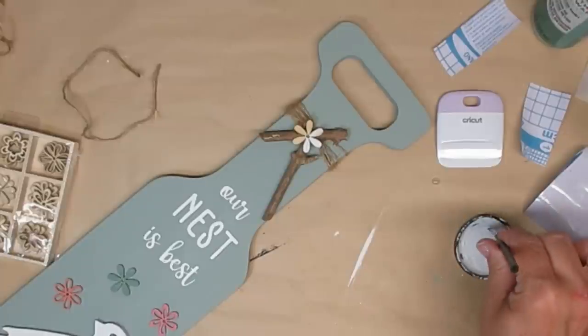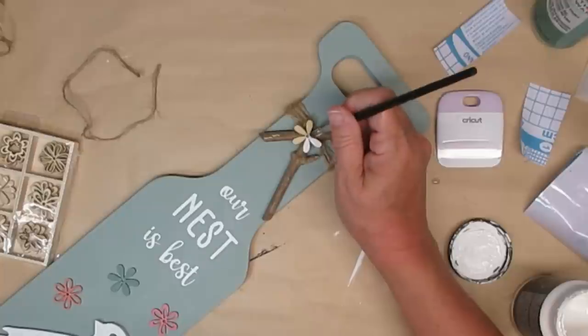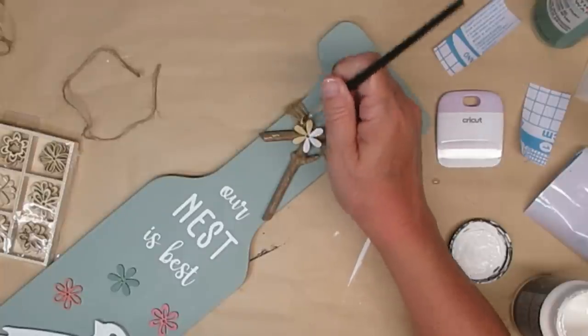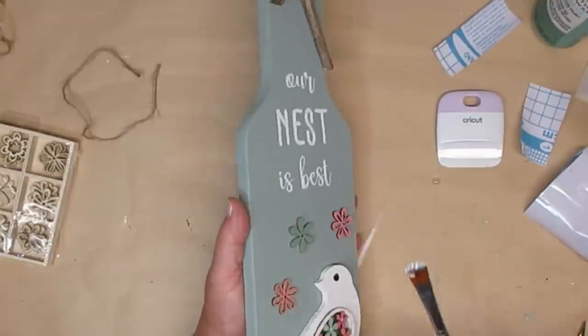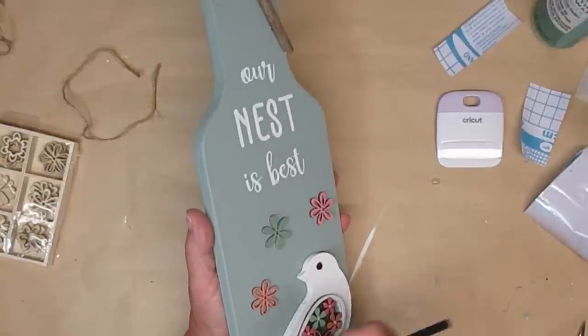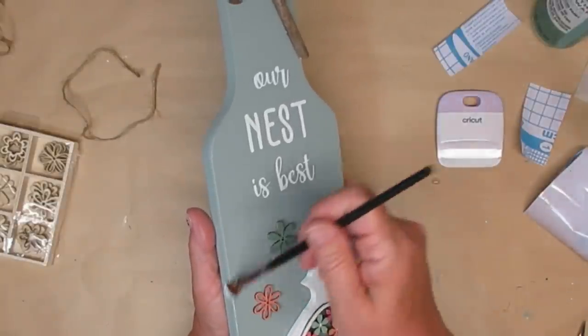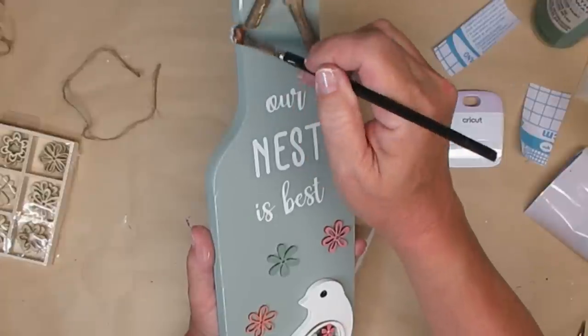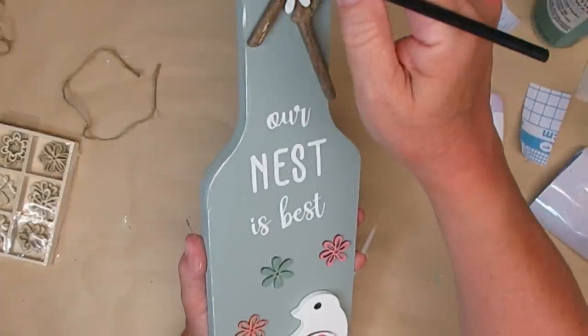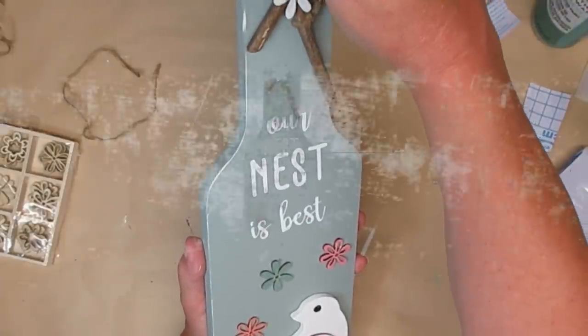I used the white that was left on my paintbrush to add a little bit of distressing around the edges of this board and this project turned out super cute as well. I used the rest of the paint that was on the brush to distress around the edges of the board and a little bit on top of it and I think this one turned out super cute too.